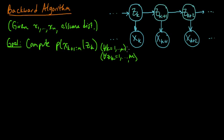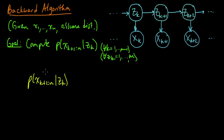We want to do this for all k from 1 to n minus 1, and for all z_k — for each of those k's, all the possible values of z_k. To tackle this, we'll take the same approach as before: try to set up a recursion. Let's try that approach and see what happens.